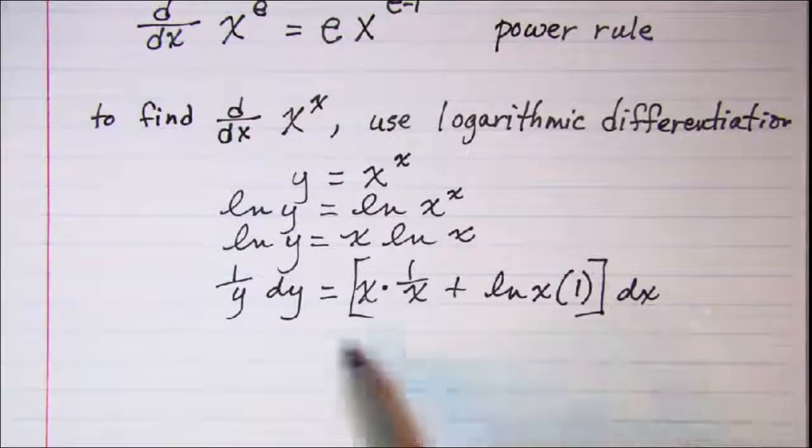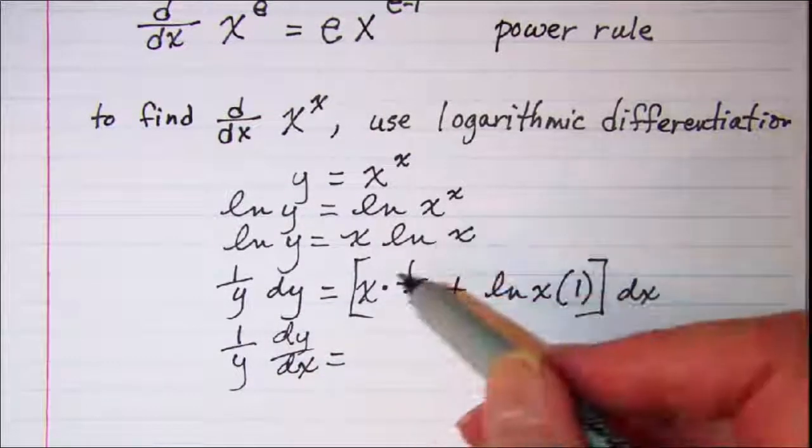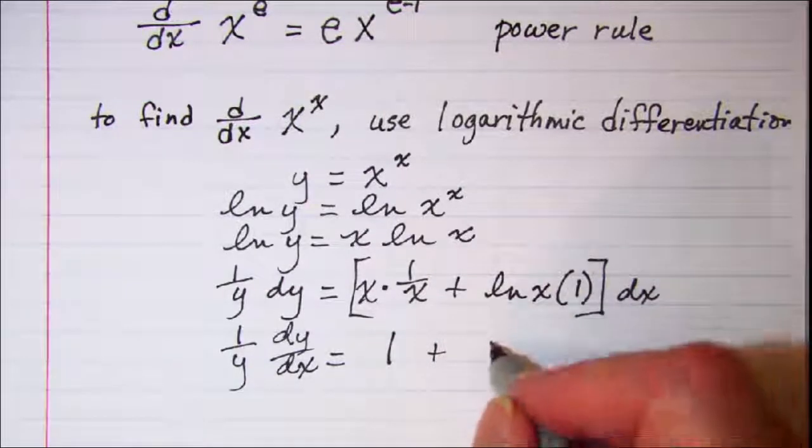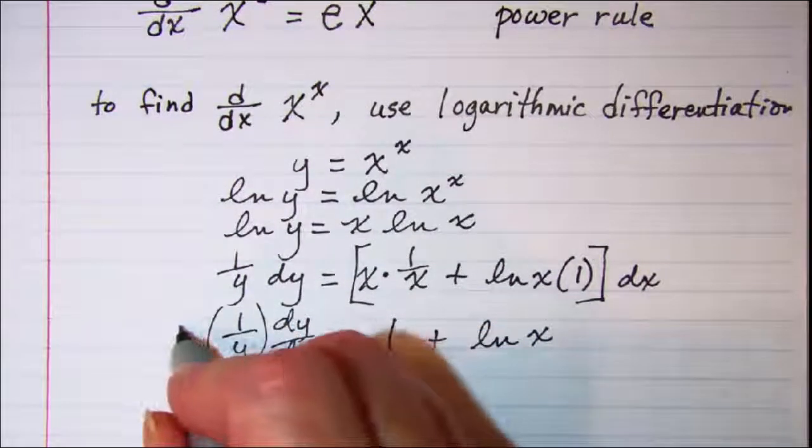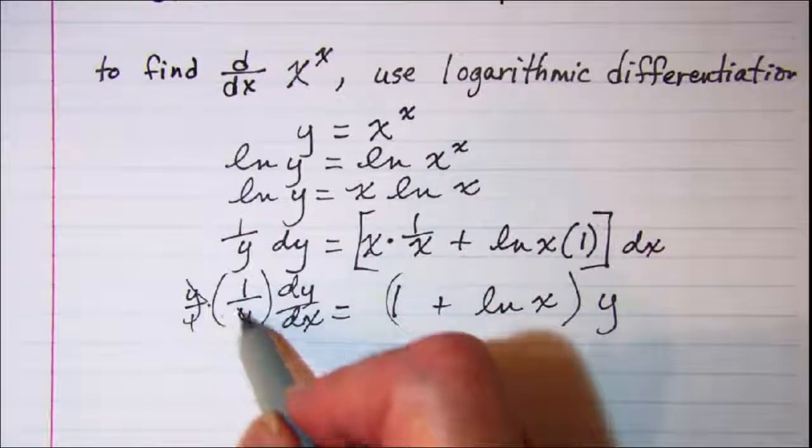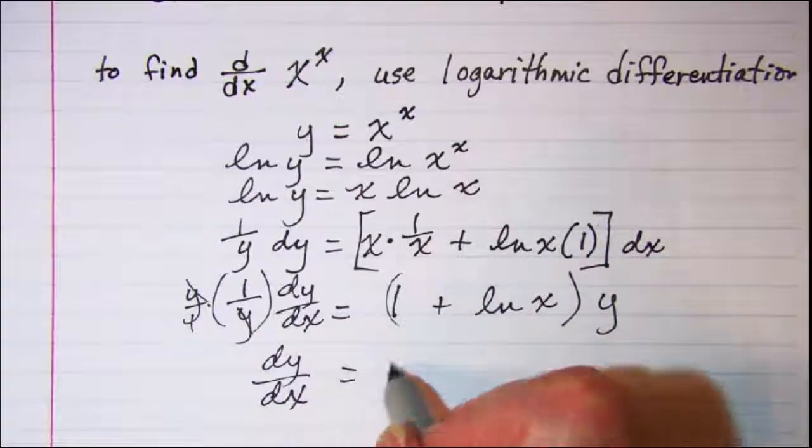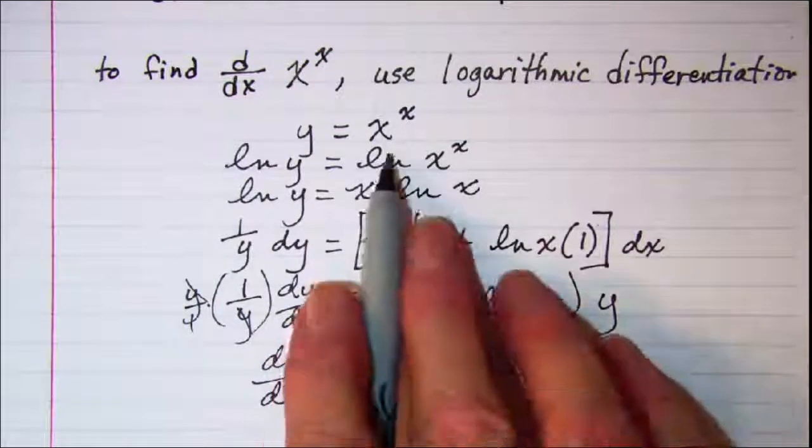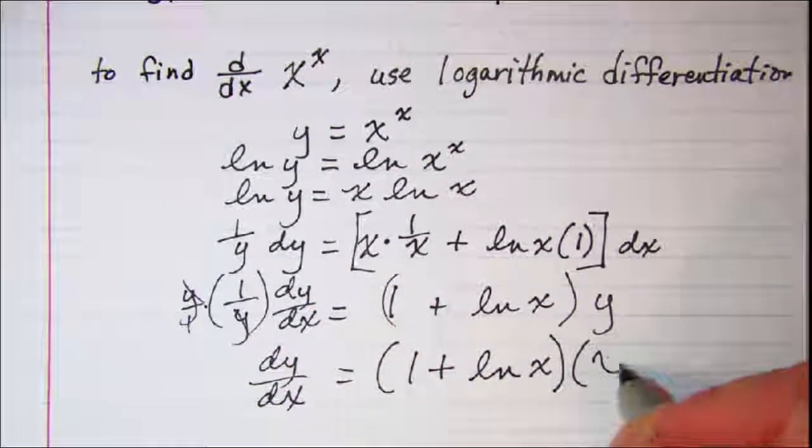So I'm going to write this as dy dx on the left side. X times 1 over x is just 1, and then ln x times 1 is ln x. And then multiply both sides by y. So these cancel and we have dy dx is equal to 1 plus ln x, and then in place of y I need to write this expression that's in x, so times x to the x.